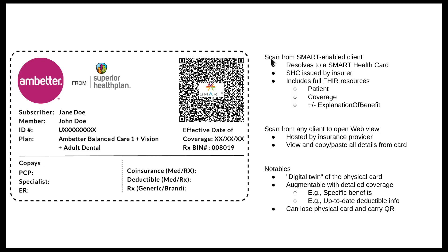If you've got software that knows about these smart specifications — a smart-enabled client — you can scan this QR code and your software will automatically get access to data in the form of a Smart Health Card. That's a cryptographically signed FHIR bundle issued by the insurance plan. It would have full-fidelity FHIR resources that you'd expect in order to make sense of the data on a physical card, including a Patient resource, a Coverage resource, and maybe even historical information like Explanation of Benefits.